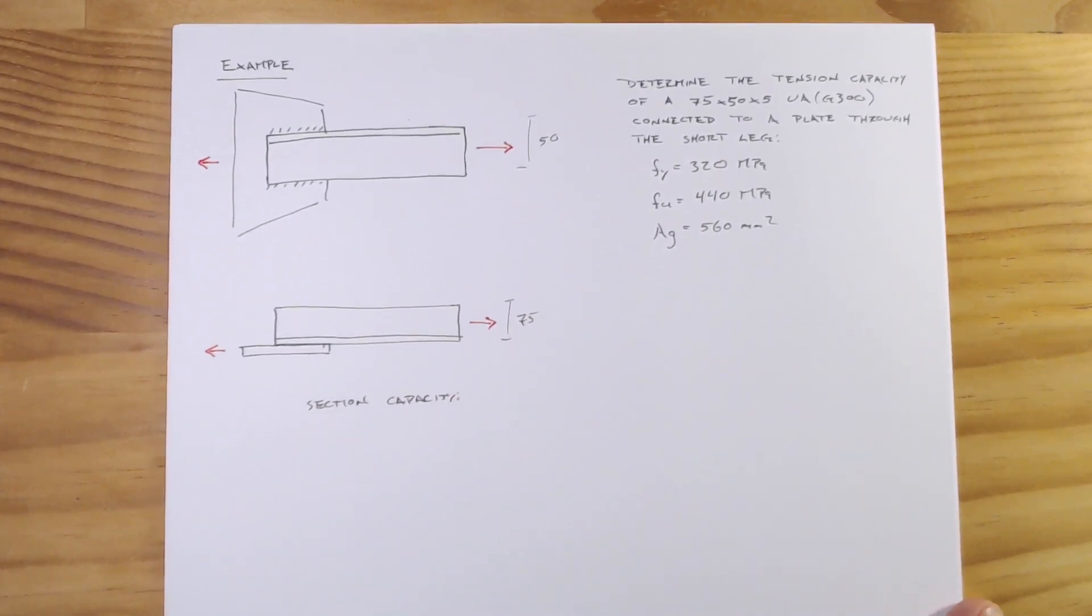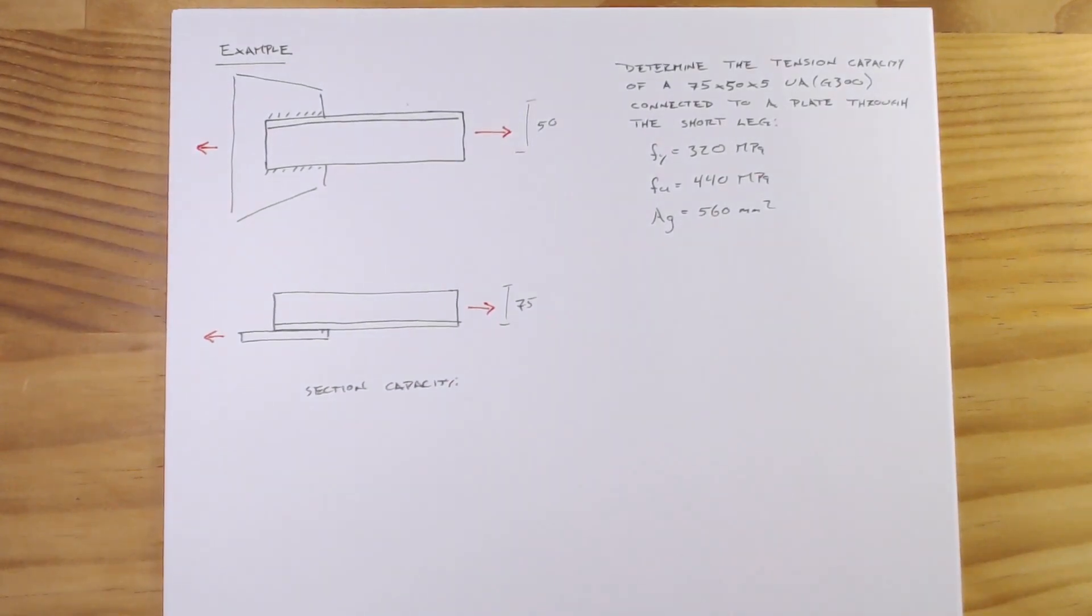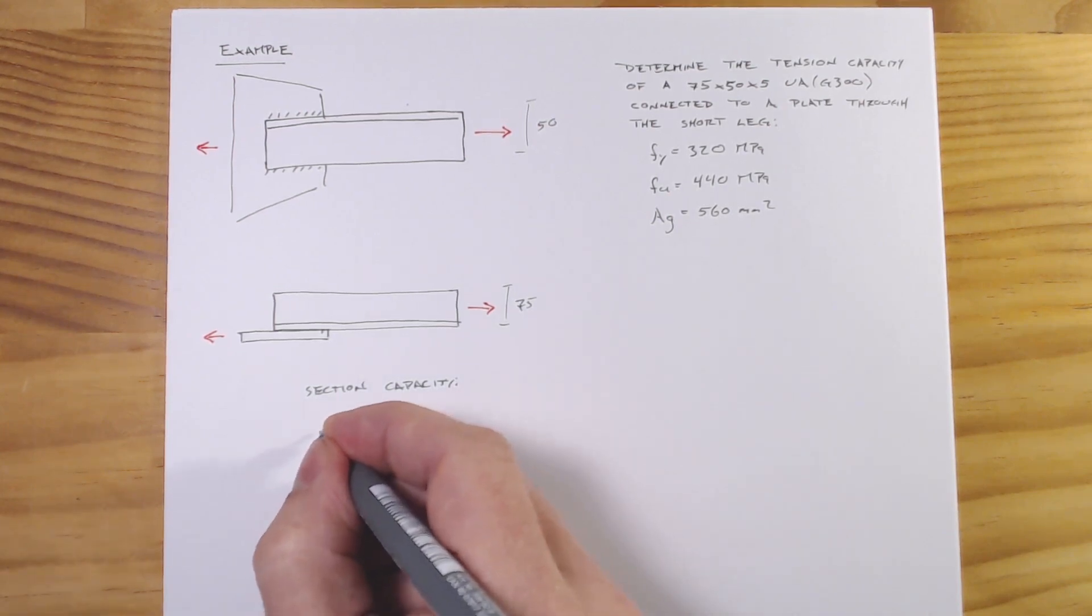Recall that when we're doing our tension design or tension analysis we look at what's going to be the minimum capacity from one of two failure modes. First is yielding of the gross section and second is rupture of the net section.